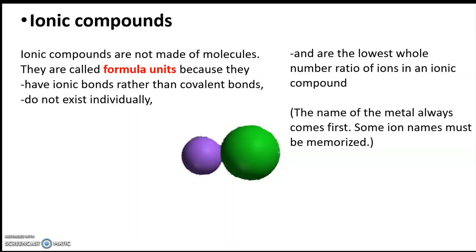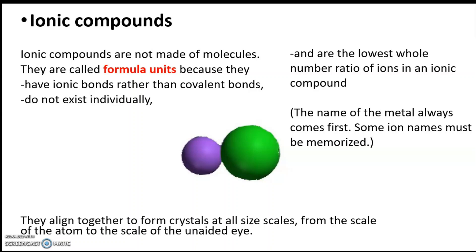For an ionic compound, we're writing that formula unit. And speaking of which, when we do that, the name of the metal always comes first. The names of the metals we can get off the periodic table. A lot of times, the names of the non-metals we can get off the periodic table. But there's also times where there's ion names we just have to memorize. Some of the polyatomic ions. And so they align together to form crystals at all size scales, which you're going to see in just a minute.